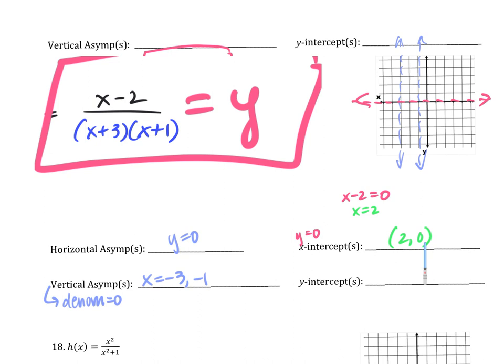What about my y-intercept? It's when my x is zero. Zero minus two on top? Negative two. Zero plus three, three times zero plus one. Three times one? Three. So what do I have? Negative two-thirds.